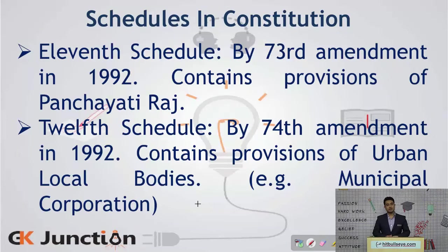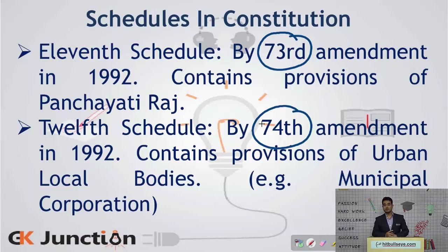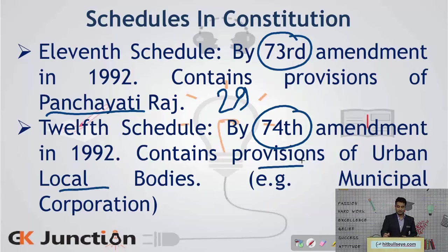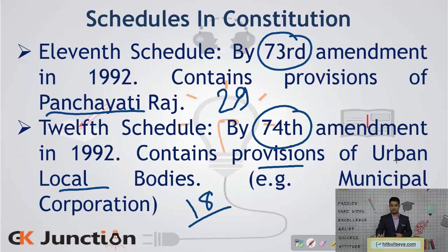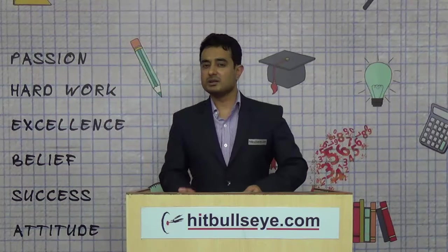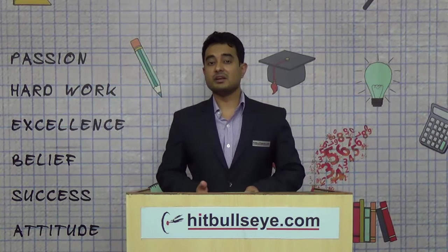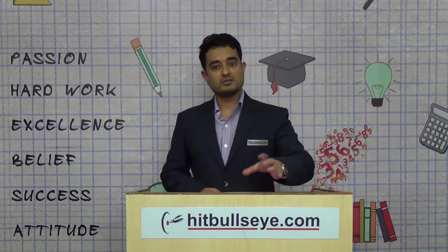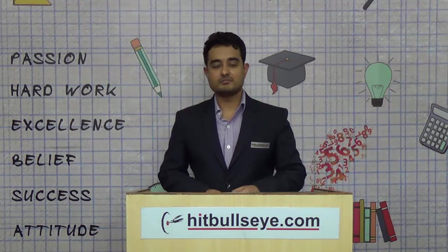The eleventh and twelfth schedules were both added by the 73rd and 74th constitutional amendments respectively. The eleventh schedule contains 29 subjects on which panchayats can legislate and the twelfth schedule contains 18 subjects on which urban local body governments — for example municipalities or municipal corporations — can make laws to generate revenue and support welfare, maintenance and development of villages, districts and cities.